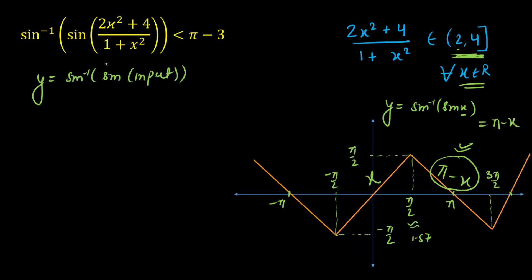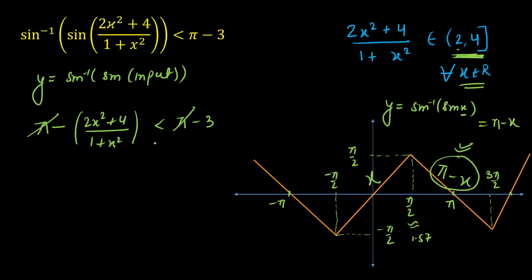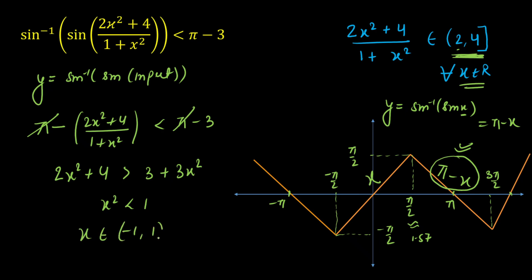Since the input varies from 2 to 4, the output is π minus (2x² + 4)/(1 + x²), which is less than π − 3. Pi cancels on both sides, so −(2x² + 4)/(1 + x²) < −3. Multiplying by −1 reverses the inequality. Cross-multiplying by (1 + x²) — which is positive, so the sign does not change — gives 2x² + 4 > 3 + 3x². Simplifying yields x² < 1, so x ∈ (−1, 1). This is our final answer.